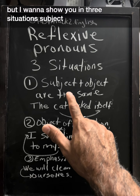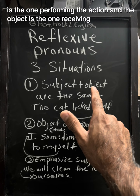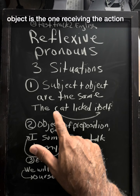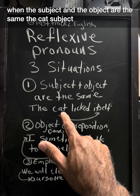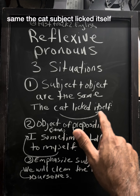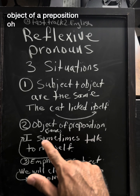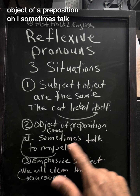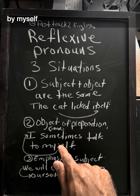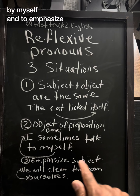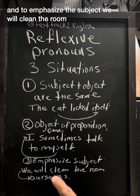The subject is the one performing the action, and the object is the one receiving the action. When the subject and the object are the same — the cat licked itself — that's the object. Object of a preposition: I sometimes talk to myself. And to emphasize the subject: we will clean the room ourselves.